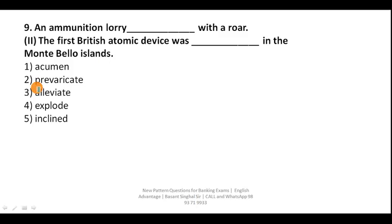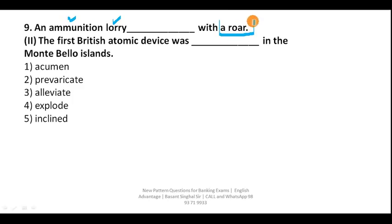Question nine: 'An ammunition lorry with a roar ___.' It is a lorry filled with ammunition, and the keyword is 'a roar.' An ammunition lorry creates a roar only when it explodes. So your correct answer is 'exploded.' The sentence becomes: 'The first British atomic device was exploded in the Monte Bello Island.'